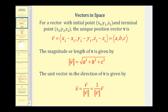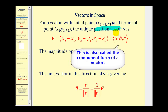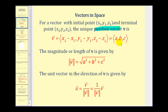For a vector in space with initial point (X1, Y1, Z1) and terminal point (X2, Y2, Z2), the unique position vector V can be found by subtracting the X, Y, and Z coordinates, resulting in the position vector ⟨A, B, C⟩. Notice the special notation — pointed brackets represent a position vector. This means the initial point is at the origin (0, 0, 0) and the terminal point is (A, B, C).